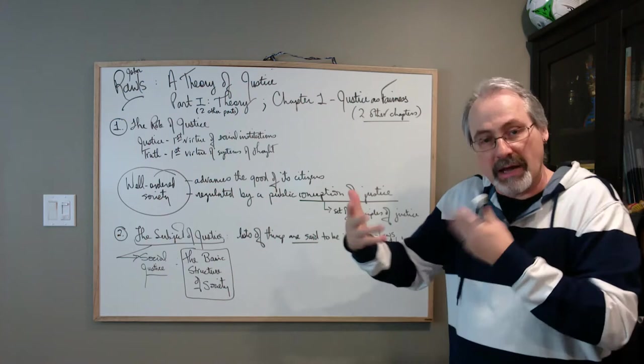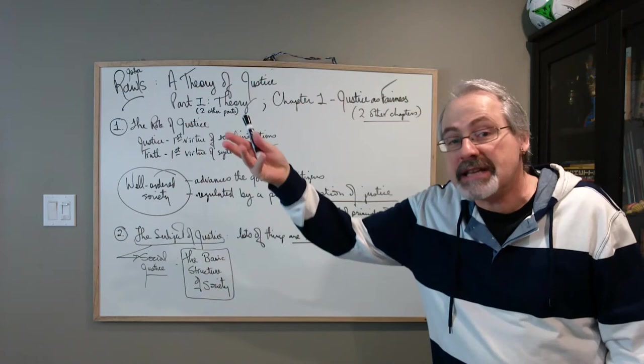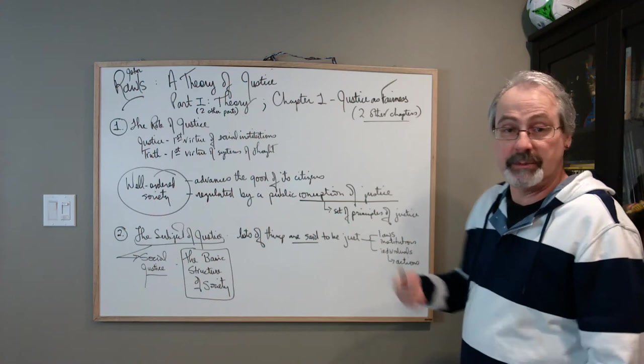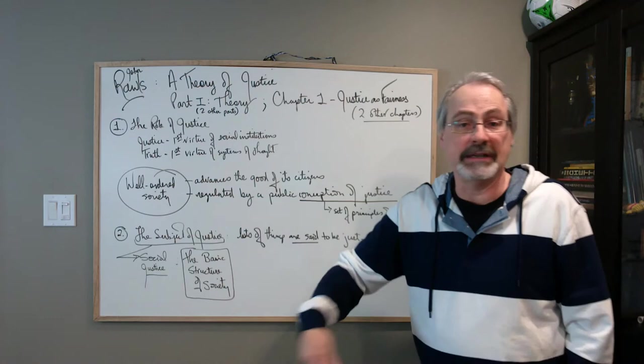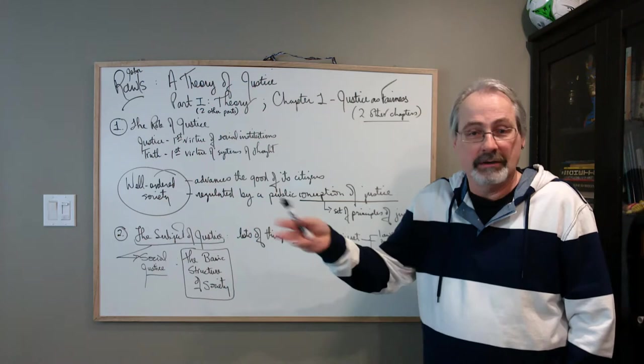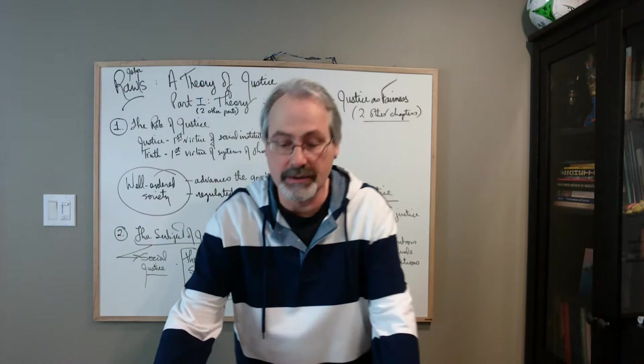And then, of course, we talk about individual actions as well, individual actions taken by institutions as well. So we talk about what an institution did if they, you know, we talk about incarceration or benefits or whatever that they might bestow upon citizens. Was it just to do that? And Rawls thinks that a lot of benefits that are a result of our cooperation are fundamentally not just. And we have to look at ways of trying to balance these things out. And then, of course, individual actions are also talked about in the context of whether or not they are just.